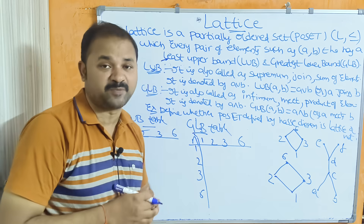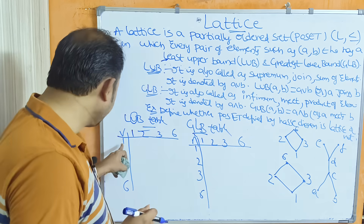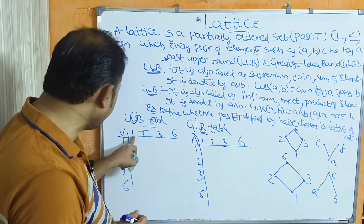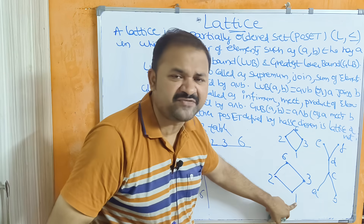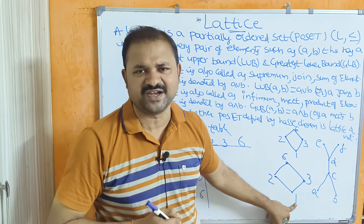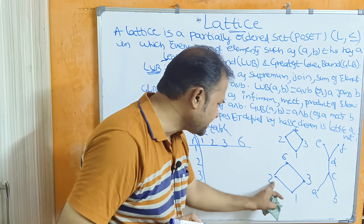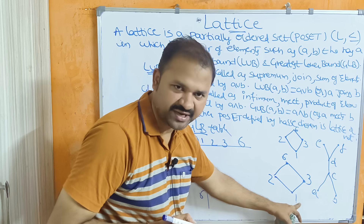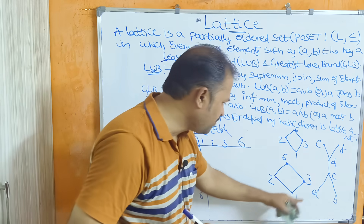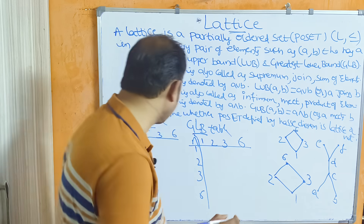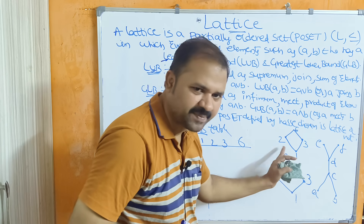For the LUB table, we focus on the upper bound. LUB(1,1) = 1, LUB(1,2) = 2, LUB(1,3) = 3, LUB(1,6) = 6. For the row of 2: LUB(2,1) = 2, LUB(2,2) = 2.